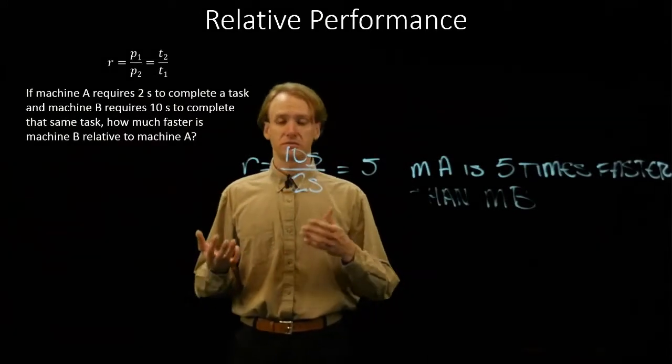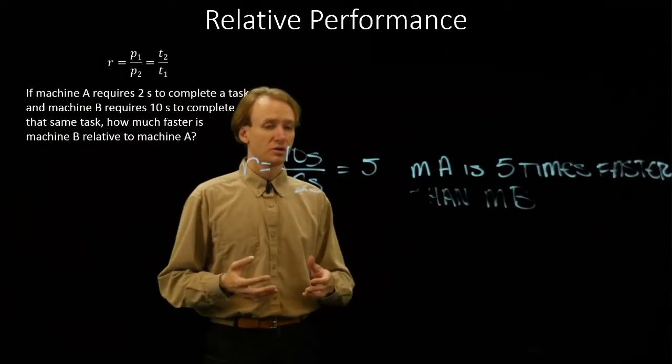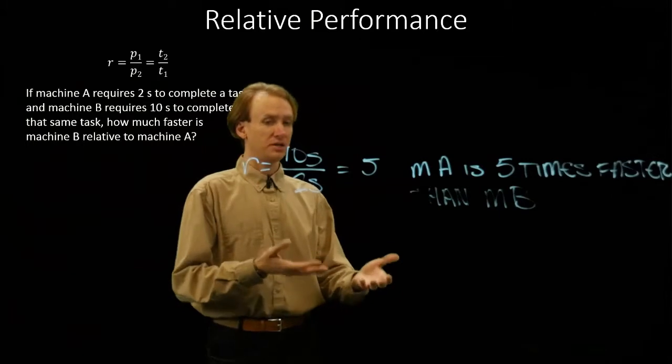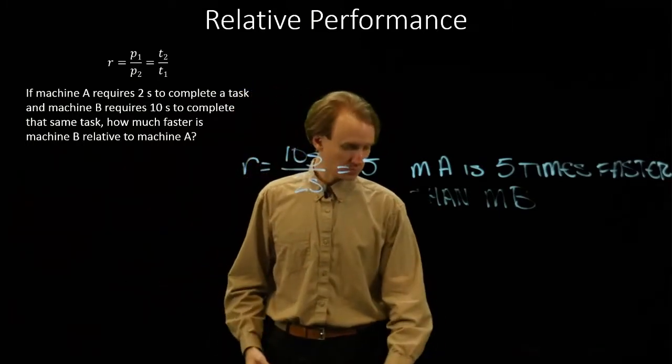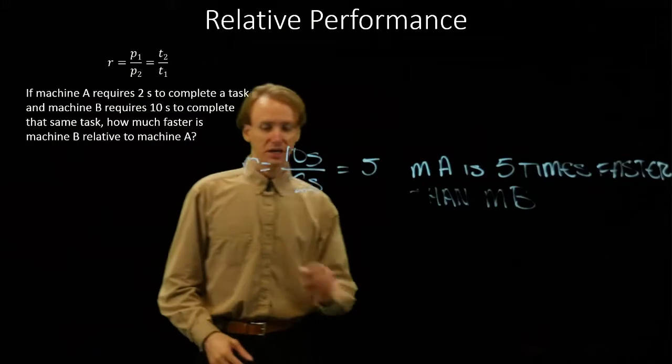But we can flip this problem around and ask, well, how much faster is machine B than machine A? So if we do this again, well, we'd say in this case machine B is number one.